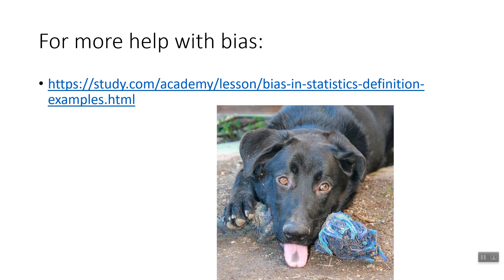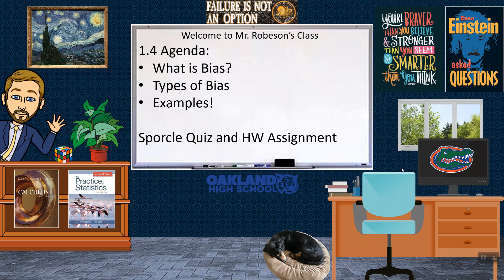If you want more help with biases, there's a video at the link posted in the description below. So that was bias. Now you have a Sporkel quiz to go practice — it's a crossword puzzle, so it should be pretty short. There is a homework assignment for this posted on Google Classroom. Please attempt that before our next class and then submit it online after class. See you next time!